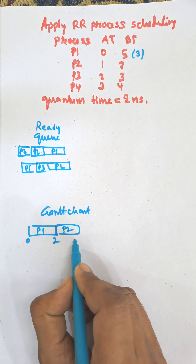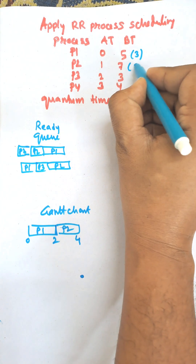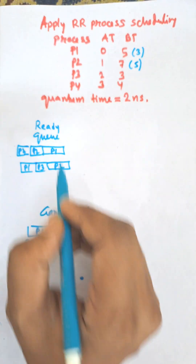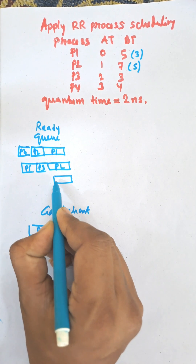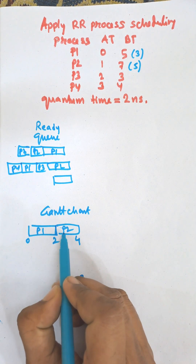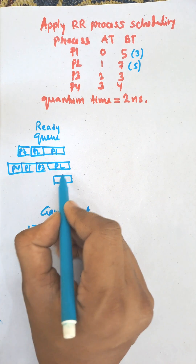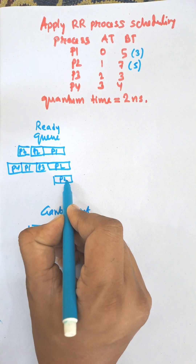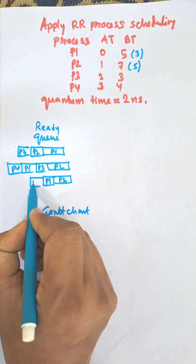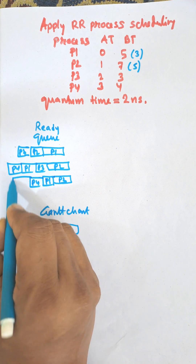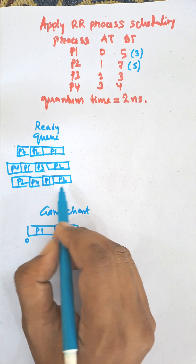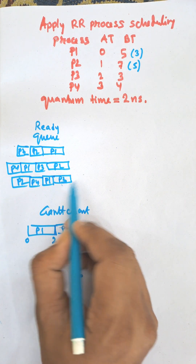P2 will execute up to time 4, remaining time is five. Then within this period P4 also arrived. After the execution of P2, it goes to the end of the queue. The order is P3 at the front, then P1, then P4, then P2. Next the processor will select P3 for execution.